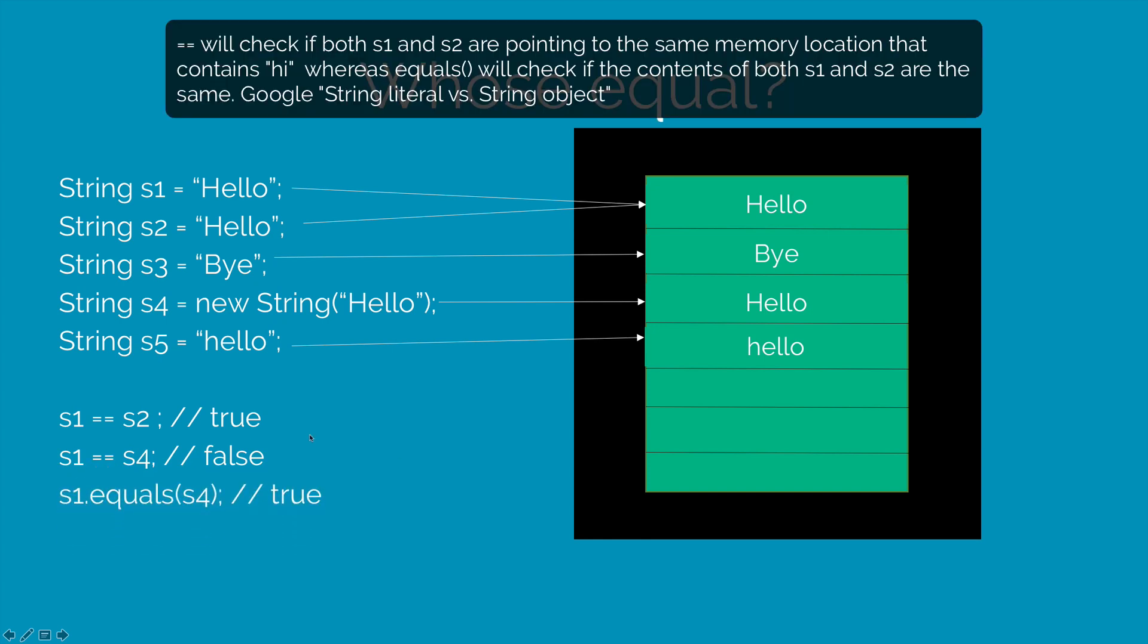Now if you say s1.equals s4, then you get true because the equals method compares the contents of the two strings instead of checking who's pointing where.